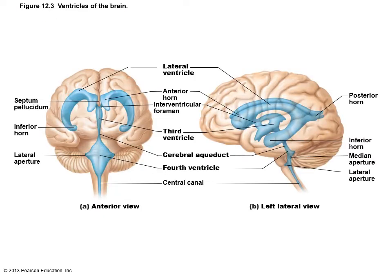Describing the formation and circulation of cerebrospinal fluid is a possible essay question. The choroid plexuses — found primarily in the lateral ventricles and the third ventricle — produce the CSF, as do the ependymal cells. CSF flows into the lateral ventricles, then into the third ventricle, through the cerebral aqueduct, into the fourth ventricle, then through the central canal, and eventually into the subarachnoid space of the meninges.